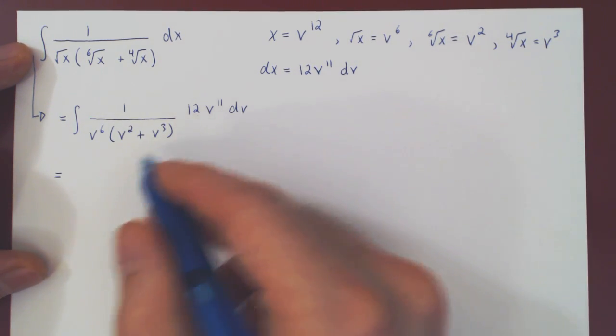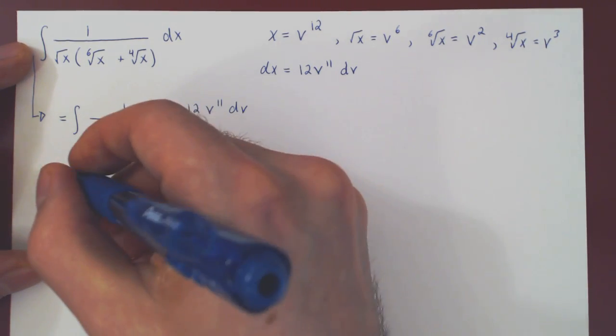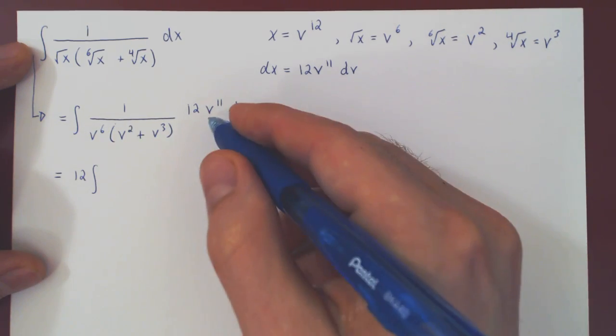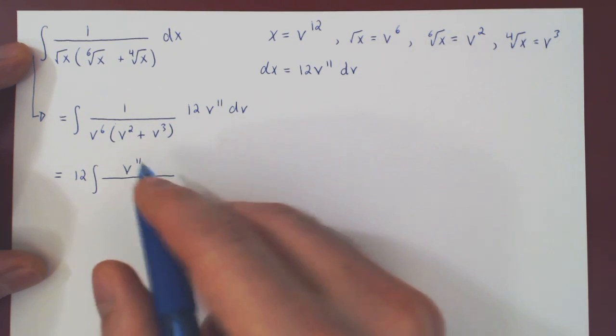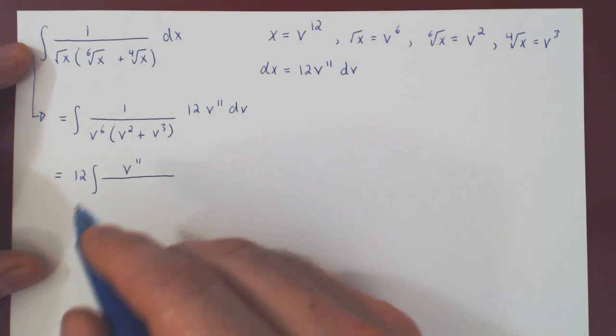So two things, we'll factor the 12 outside as a scalar multiple. And we'll have a v to the 11 on the numerator.